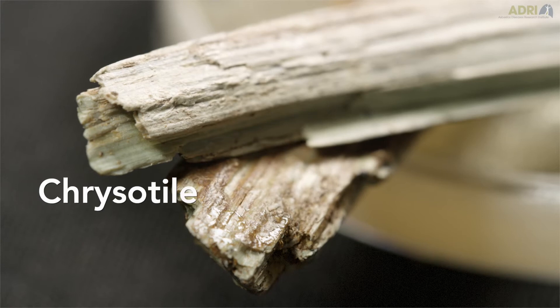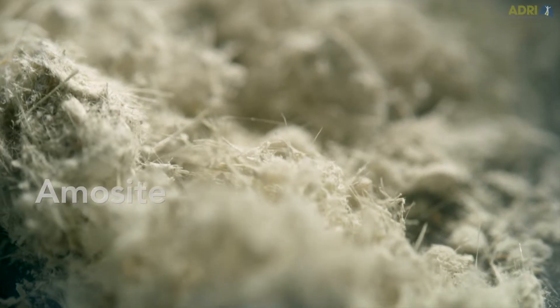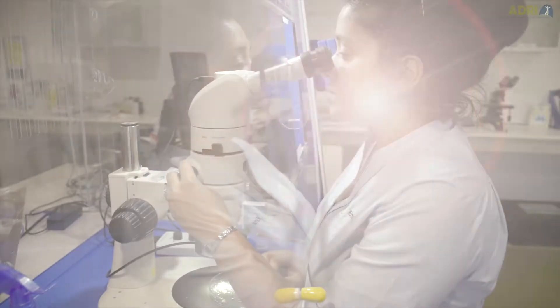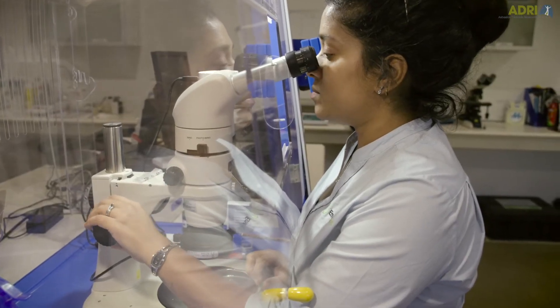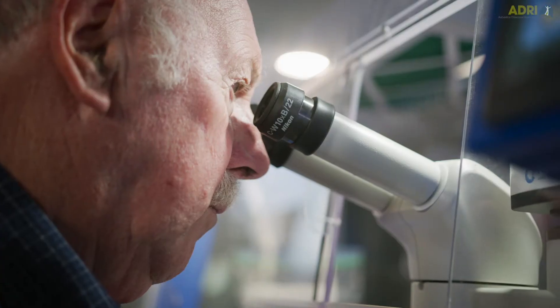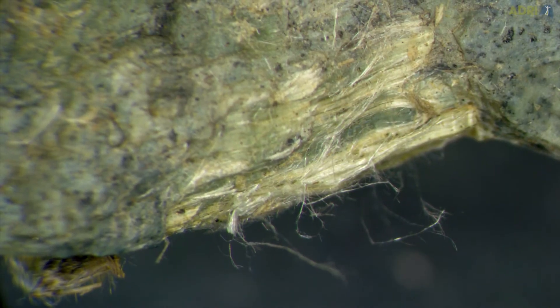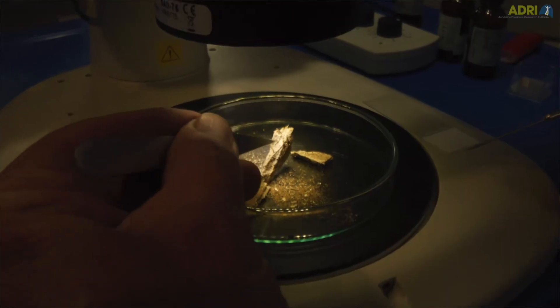There's chrysotile which is white asbestos, amocyte which is brown asbestos and chrysidolite which is blue asbestos. The most valuable part in the identification is the experience that's going through the sample and having a look at it under the stereo microscope and that you're looking at the whole sample.